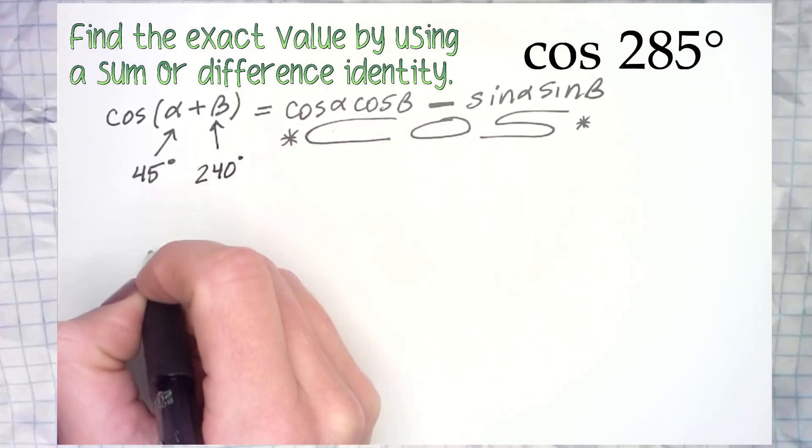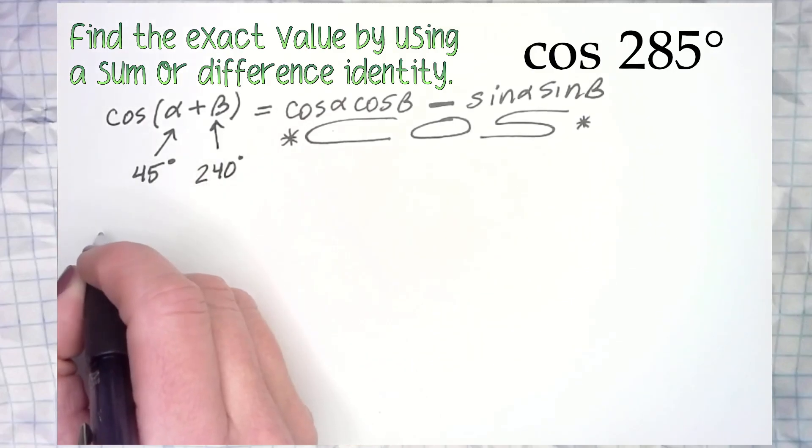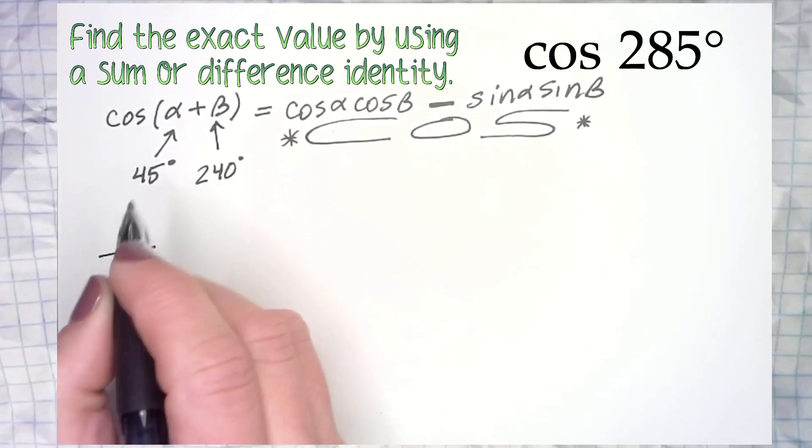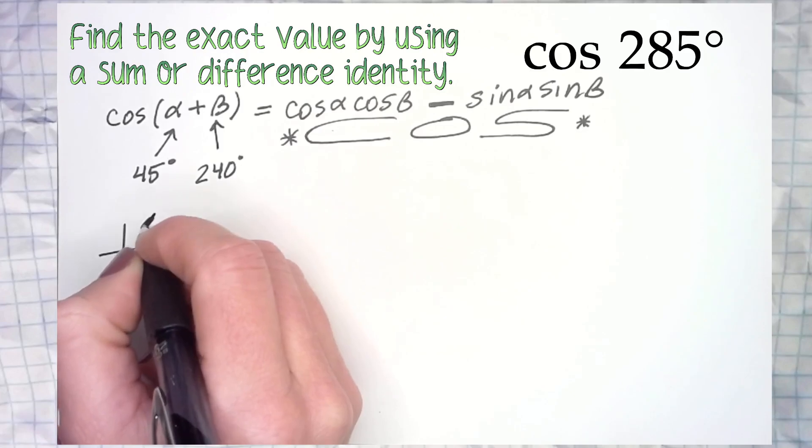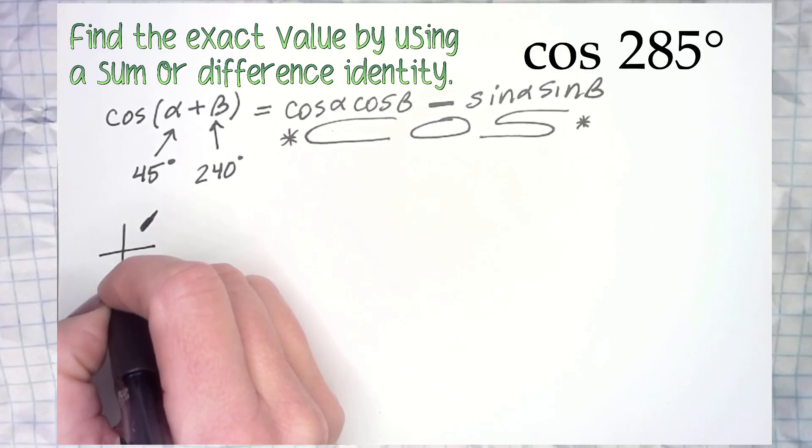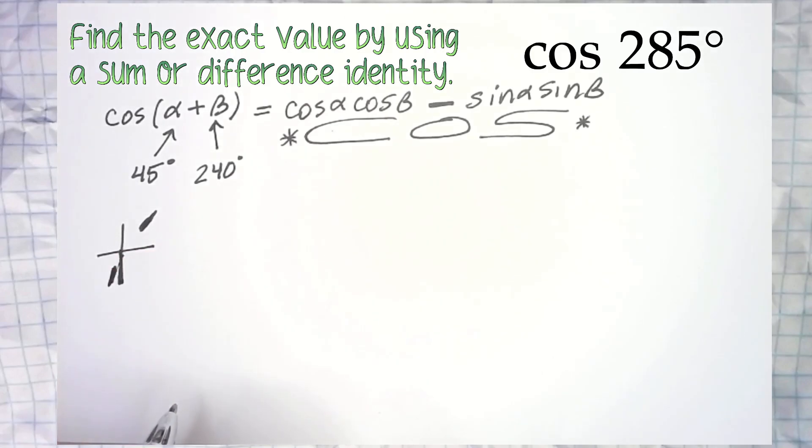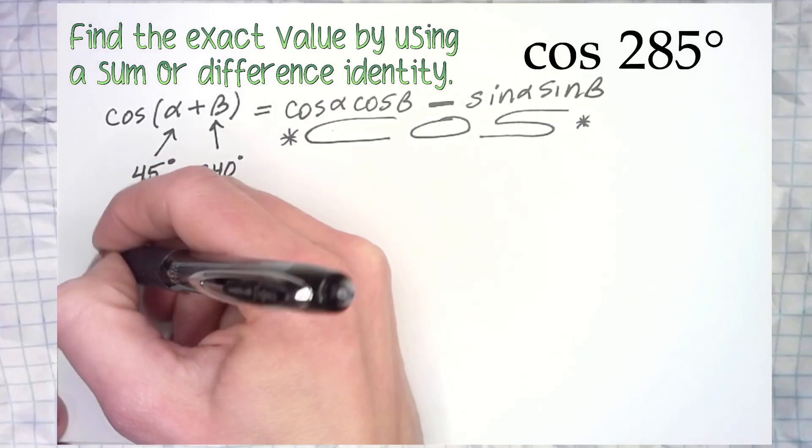So there is my alpha and my beta. Now maybe you want a little quick picture in your mind. 45 is right there, and the cosine of 45 and the sine of 45 is actually root 2 over 2. 240 degrees is right over about here - it's exactly 30 degrees before 270 degrees, so it's going to be over here.